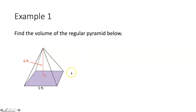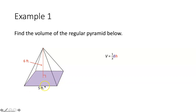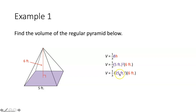Example one: find the volume of the regular pyramid. The volume formula is V equals one-third B times H. Since the base is a regular quadrilateral, it's a square. The area of the square base is 5 feet squared, which equals 25 square feet. The height is 6 feet. Multiplying one-third times 25 feet squared times 6 feet gives a volume of 50 cubic feet. Remember to use cubic units when finding volume.